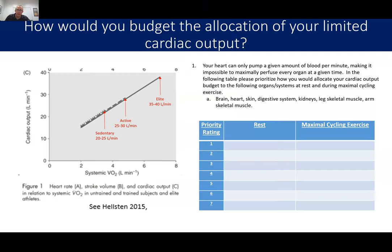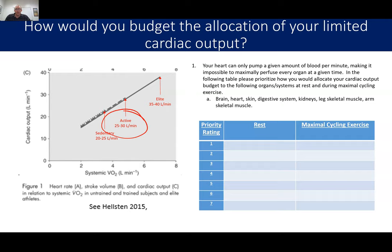It comes down to distribution of blood. Cardiac output is finite — even in normal college students probably around 25 liters per minute. That's not enough to give every organ all the blood flow it wants. If you dilated everything at maximum exercise, you'd need a cardiac output of about 100 liters per minute. With only 30 liters per minute available, you have to prioritize. You can't give the digestive system and skeletal muscle all the blood each wants — you have to compromise.